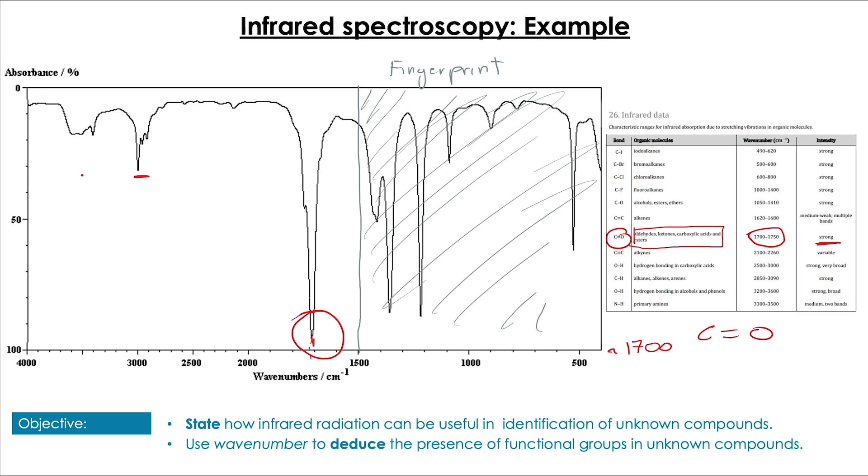With the smaller peaks on the left hand side it's harder to tell and that is because of the signal to noise ratio. So we tend to focus on these strong absorbances given by large peaks as we can be more sure about their presence. This molecule incidentally was actually propanone which unsurprisingly has that C double bond O.